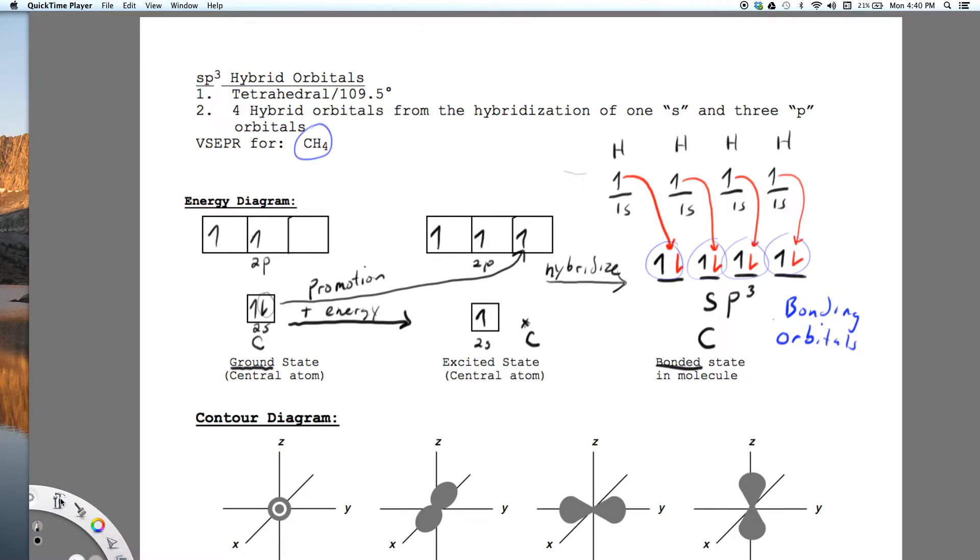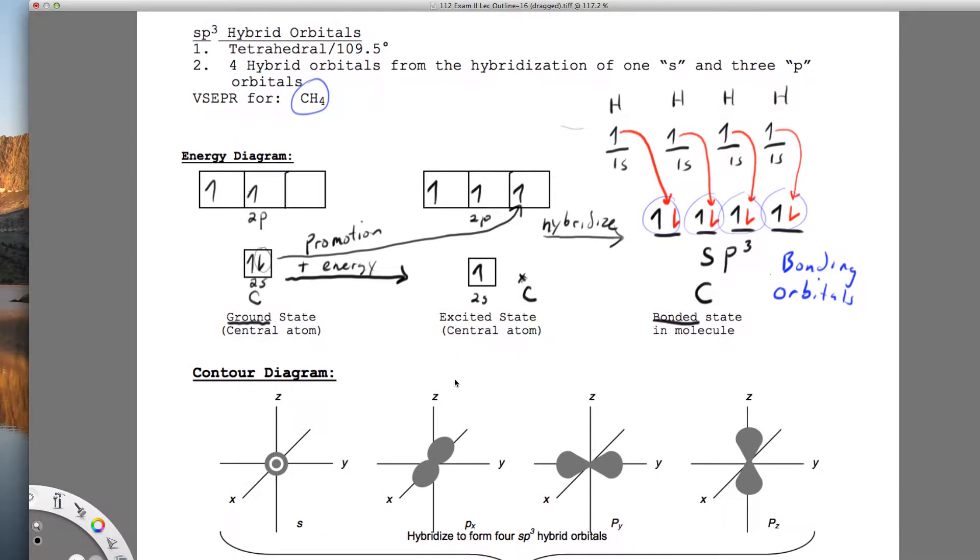In the previous video, we looked at how to draw the box diagrams for carbon in its ground state, the central atom of methane, carbon in its excited state where we promote an electron from S to P, and then finally its hybridized state where we have four equivalent orbitals.